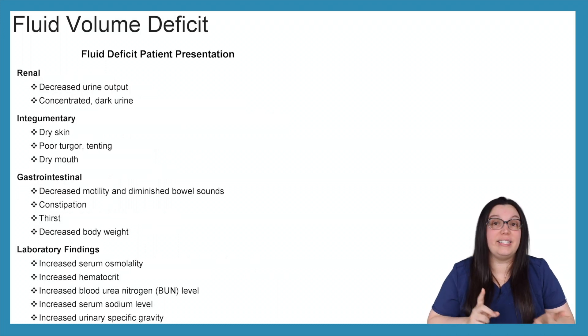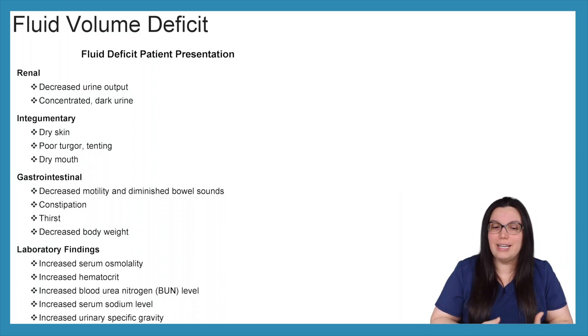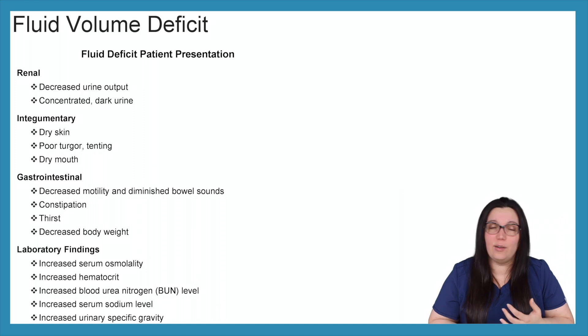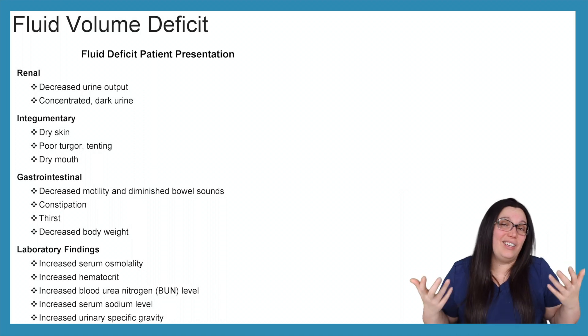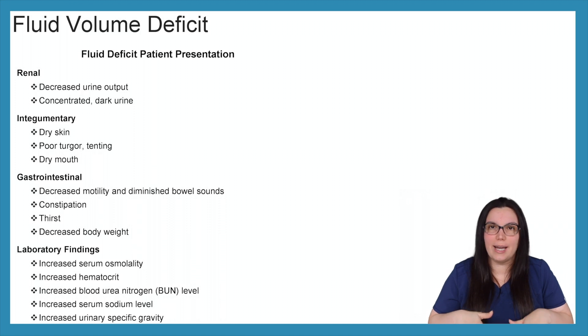When it comes to our renal, we're going to have a decreased urinary output because we don't have the volume, and that urinary output that you are going to get is going to be highly concentrated and very, very dark. Our integumentary system, we're going to have very dry skin. We don't have the fluid that we need. Poor turgor, as well as tinting, and even dry mouth is going to occur. When it comes to our gastrointestinal system, we're going to have decreased motility and decreased bowel sounds. If we're starting to shunt all of that fluid to our life-sustaining organs, you know, your GI system really isn't something that's going to keep you alive. So everything is going to start to slow way, way down. Constipation can start to occur. The patient might start to feel thirsty, and then you're going to have a decreased body weight dependent on how bad that fluid deficit is.